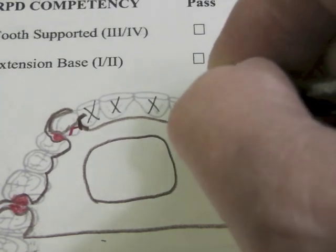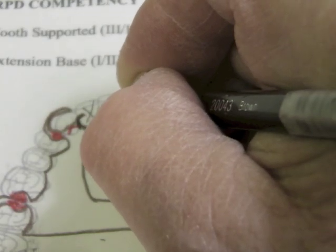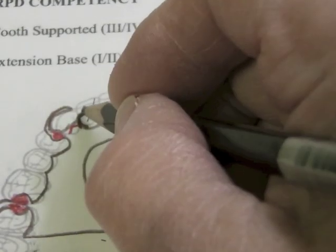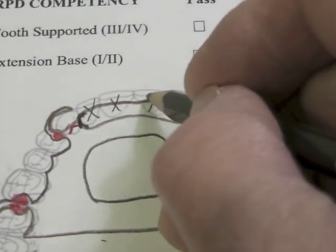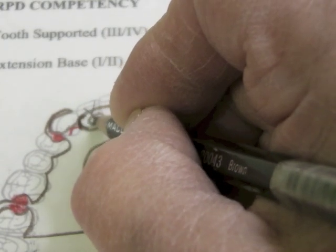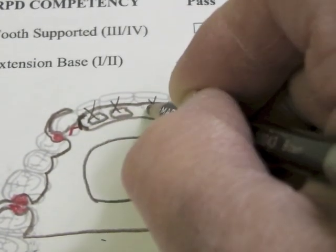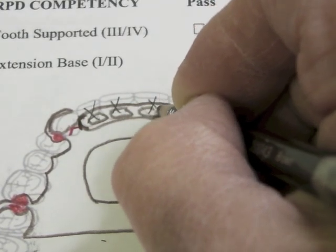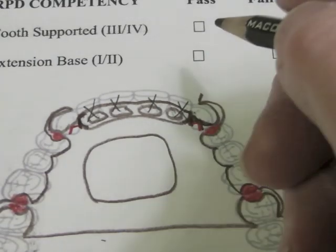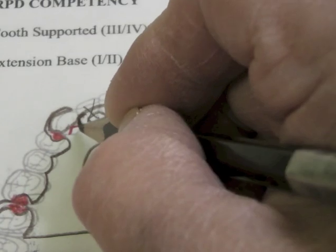And then at this guide plate we're going to come back across basically just the crest of the ridge or slightly buccal to it with another finish line here and then included in this area we'll have some loops that are opened up where acrylic can flow through that and lock these teeth, the denture teeth, onto this framework.